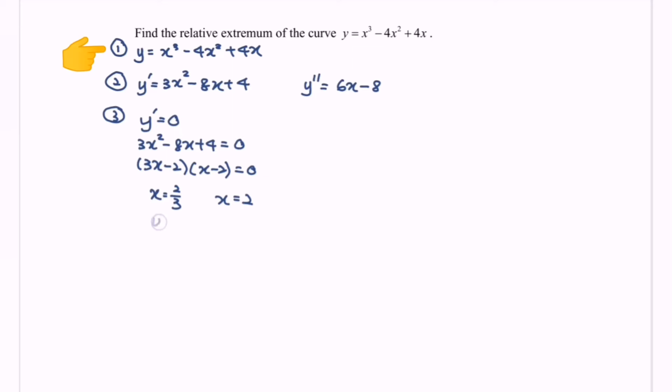So where we have y is equals to 32 over 27. If the situation is 2, the value of y will be equal to 0. So meaning that we will have the point 2 over 3, 32 over 27. Another point will be 2, 0.